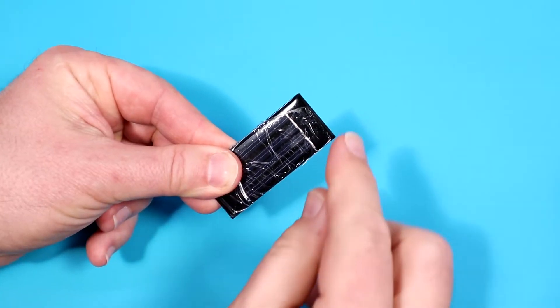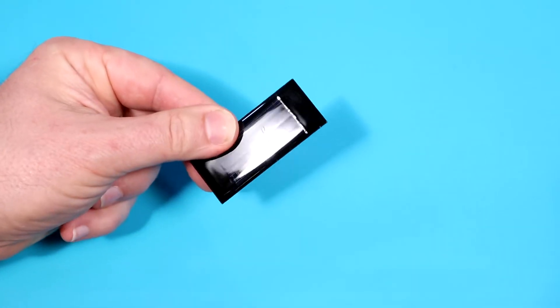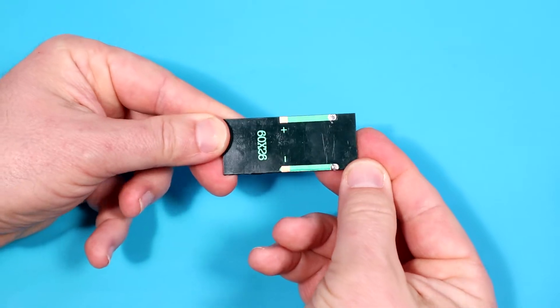The first thing we'll do is peel off the protective backing from the solar cell. Next, flip the solar cell over and you'll see two sets of soldering points on the bottom.